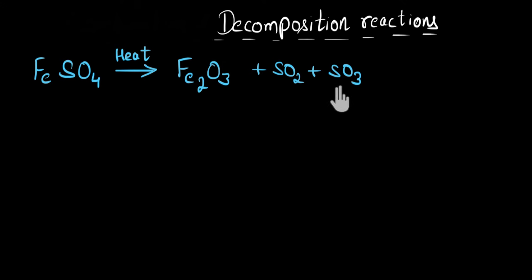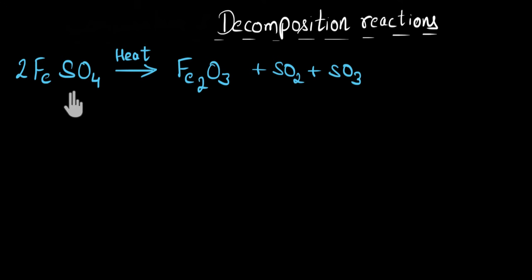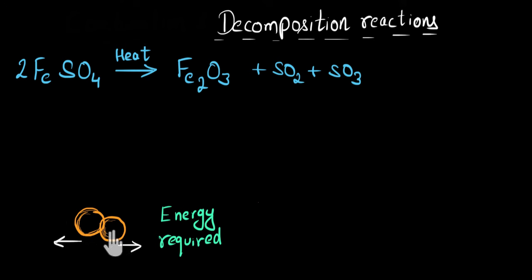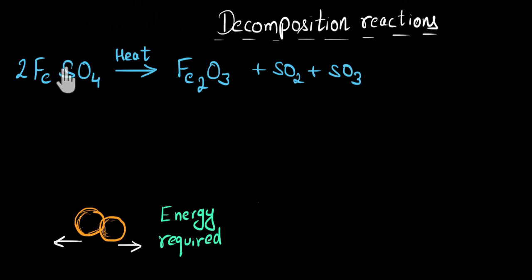In chemistry, whenever you have a bad smell, it's generally related to sulfur — sulfur is the smelly one in chemistry. Balancing the equation: we put 2 in front of FeSO4, and balance to get 2 Fe2O3, SO2, and SO3. Heat energy was required here. Generally, heat energy is required in decomposition because when you pull apart the atoms of a molecule, you need to provide energy due to the attraction between them. We'll discuss this in more detail in the exothermic and endothermic reactions video.